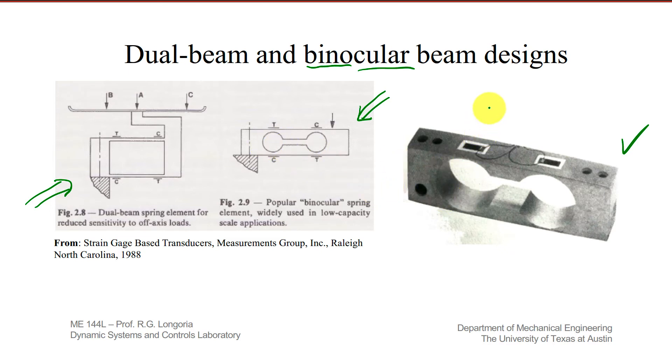Note, strain gauges are mounted right over these binocular sections. One strain gauge active along this axis, another one here. Now, how are those wired? Well, as you can see, when you apply this load down here, this gauge will be in tension, and this one will be in compression.